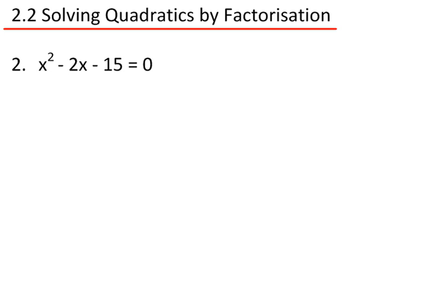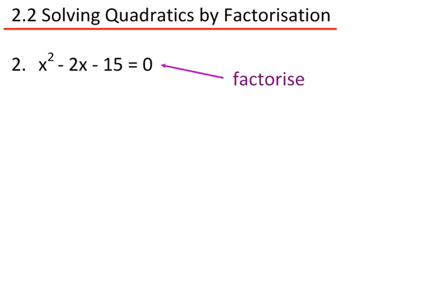Question 2: x squared minus 2x minus 15 equals 0. I need to factorize this. This time it goes in a double bracket. I need to find the same two numbers that multiply to make minus 15, and add to make minus 2.